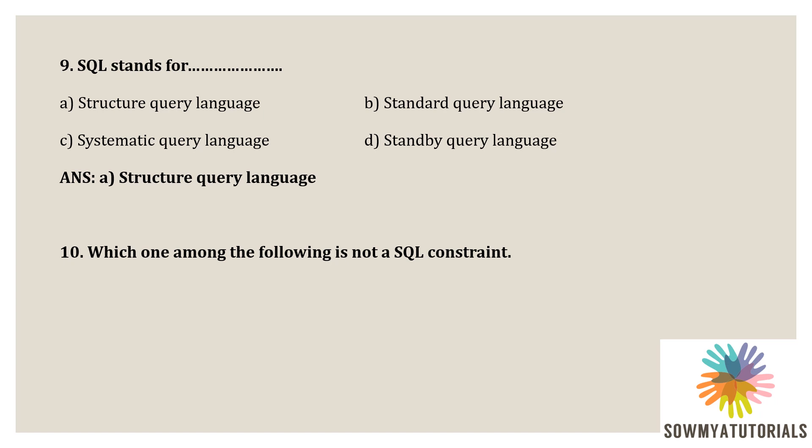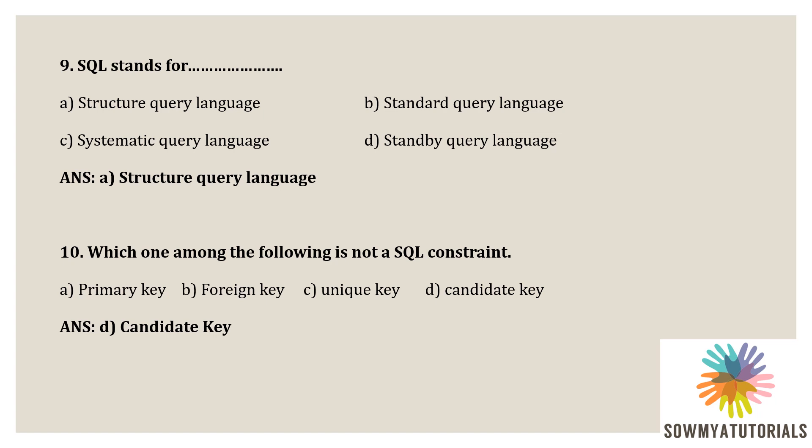Next question: which among the following is not a SQL constraint? Options are: option A, primary key; option B, foreign key; option C, unique key; option D, candidate key. Primary key, foreign key, and unique key are all SQL constraints. Candidate key is not a SQL key constraint. So the correct option is option D, candidate key.